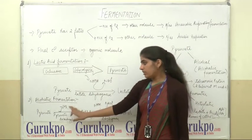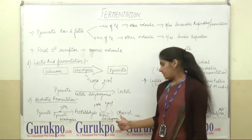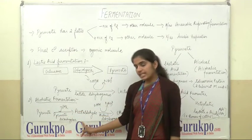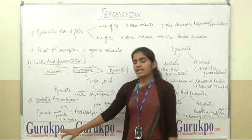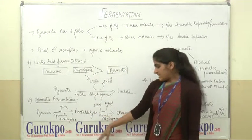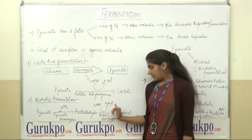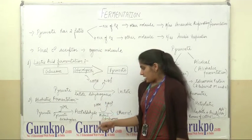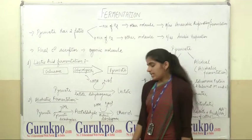In alcoholic fermentation, the pyruvate is converted first into acetaldehyde, then converted into ethanol. When pyruvate is converted into acetaldehyde, a CO2 molecule is released, and this reaction is catalysed by the enzyme pyruvate decarboxylase. Then acetaldehyde is converted into ethanol. In this process, NADH is converted into NAD+, and the NADH is provided by glycolysis. This reaction is catalysed by the enzyme alcohol dehydrogenase.